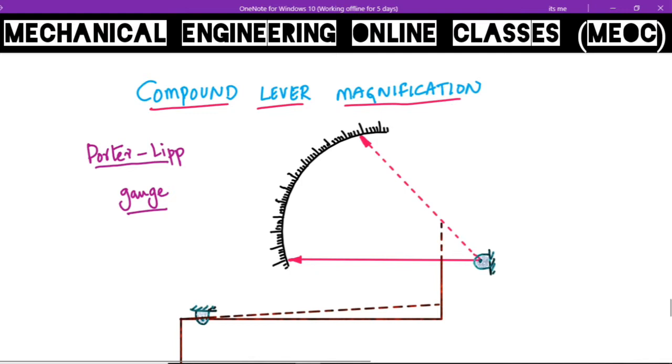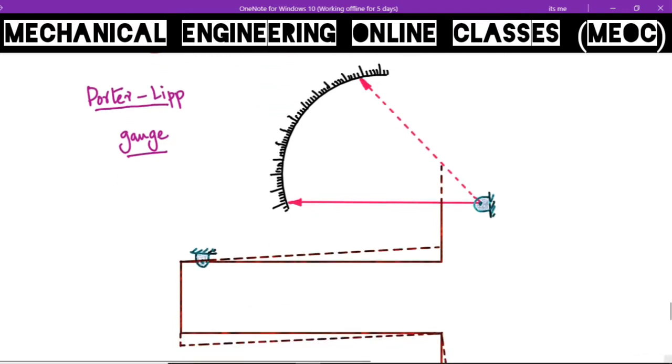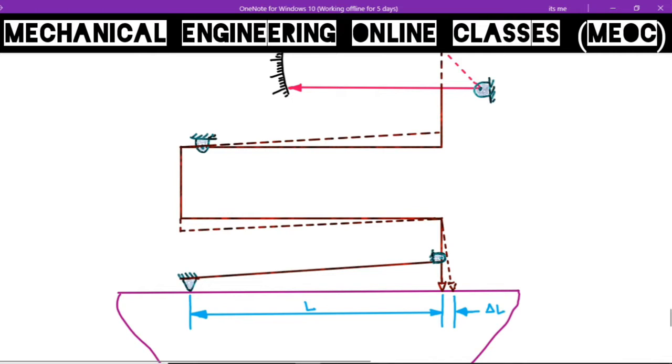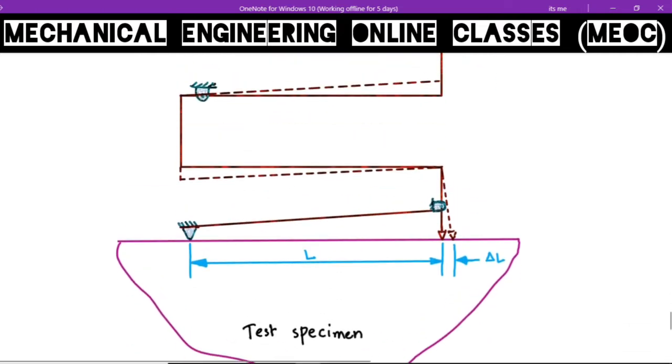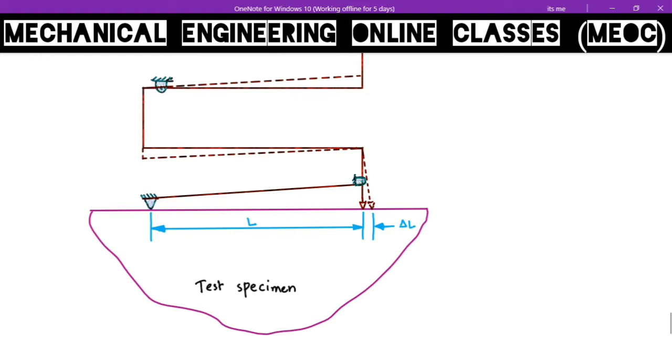Looking at the mechanism of Porter-Lipp gauge, it employs more than one lever. Here we have a test specimen with two prepared holes, one here and the other here. One prepared hole is in contact with the hinge and that hinge is connected to a lever. This contact point is the fixed point, stationary and won't move even after strain occurs. And this point is the movable contact point.